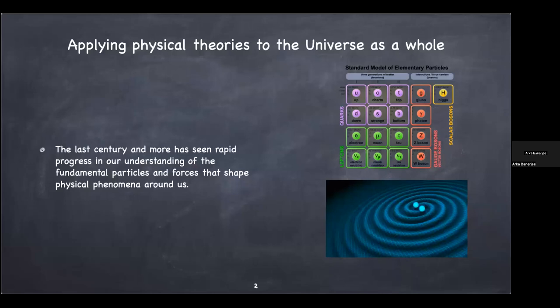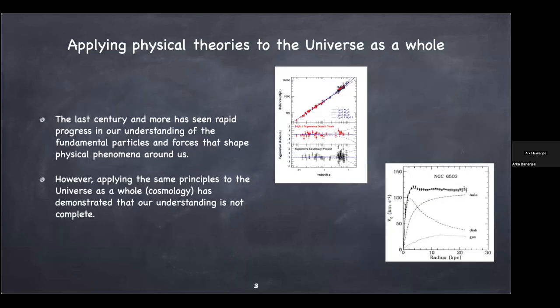General relativity is our theory of gravity, and most of the phenomena we see is explained by some combination of these two aspects of physics. However, in cosmology we want to apply the principles of physics to understanding the evolution of the universe as a whole. So the whole universe is our system, and when we tried to apply what we knew from terrestrial experiments, it turned out that we were missing something.